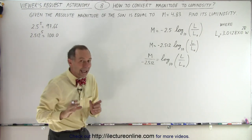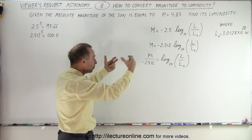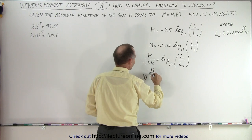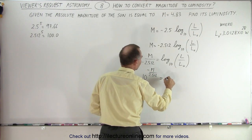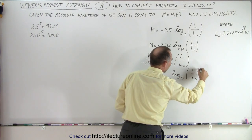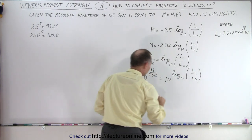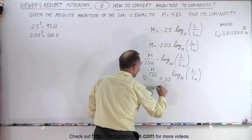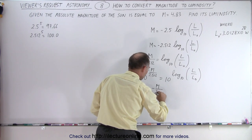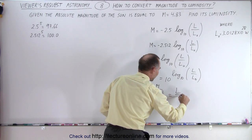So now we need to take the anti-log of both sides, which means take what's there and raise it as an exponent to the number 10. So 10 raised to the minus M over 2.512 is equal to 10 raised to the log base 10 of L over L sub not. Now this will negate the log, which means that this will simply equal to the ratio. That means that 10 raised to the minus M over 2.512 is equal to L divided by L sub not.